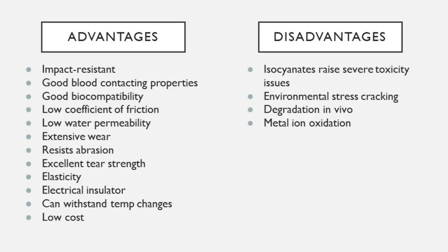Polyurethanes have a number of distinct advantages: they're impact resistant, have fantastic blood compatibility — making them excellent for artificial hearts or ventricular assist devices — and great biocompatibility overall. They have a low coefficient of friction, low water permeability, can withstand extensive wear and vibration, and have excellent tear strength, elasticity, and electrical insulation (hence their use in pacemaker leads). They can withstand temperature changes and can be manufactured at low cost. Disadvantages include toxicity concerns from isocyanates used in synthesis, environmental stress cracking making them poor for load-bearing applications, and susceptibility to in vivo degradation and metal ion oxidation.